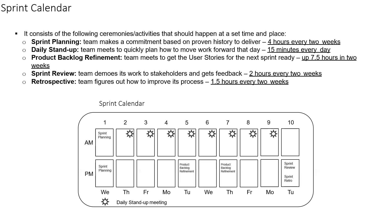If you are following a two-week sprint cycle, your product backlog refinement meeting ideally should not be done all at a stretch, as otherwise it is going to take an entire day. You can break the product backlog refinement meeting into two different sessions, and it should not take more than eight hours in total within a sprint. At the end of this meeting you should be ready with the list of priority PBIs or user stories for the next sprint.